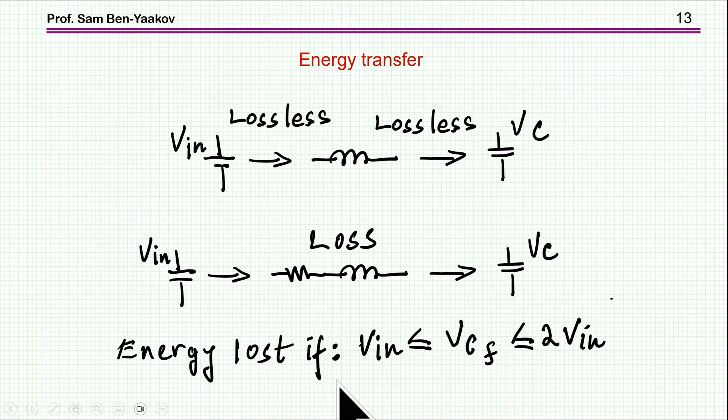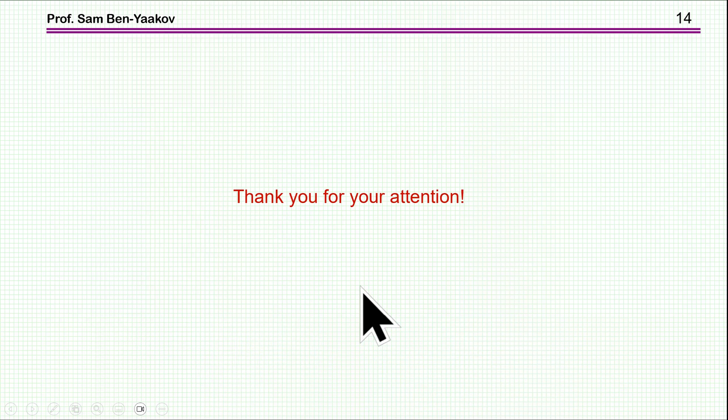So, therefore, you can conclude that if you have a charging process with an inductor, then the capacitor voltage could be between Vin and 2 Vin, and the losses will depend where it is in between these two. So, this actually explains this seemingly paradox in this case. So, this brings me to the end of this presentation. I hope you found it of interest. Thank you very much.